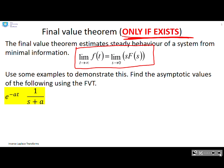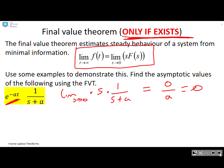Here I've got an exponential, e to the minus at, and its Laplace transform, 1 over (s + a). So if I do the limit as s goes to zero of s times 1 over (s + a), that gives me zero over a, which is zero. So the asymptotic value is zero, and I know that because if I sketch e to the minus at, that's what I expected.